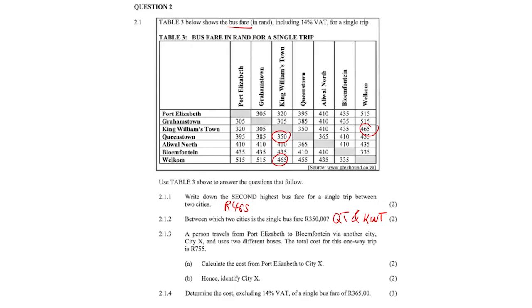Question 2.1.3: A person travels from PE to Bloemfontein via another city, city X, using two different buses. The total cost for this one-way trip is 755 rand. Calculate the cost from Port Elizabeth to city X. PE to Bloemfontein is 435 rand, so 755 minus 435 gives you 320 rand.